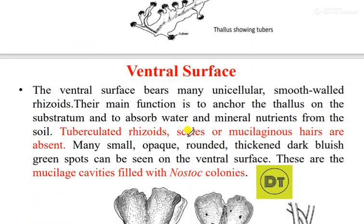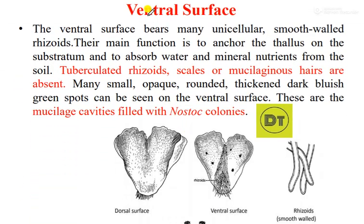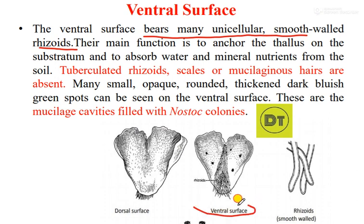The ventral surface bears many unicellular smooth-walled rhizoids. The rhizoids function in the absorption of water and mineral nutrients for the thallus.